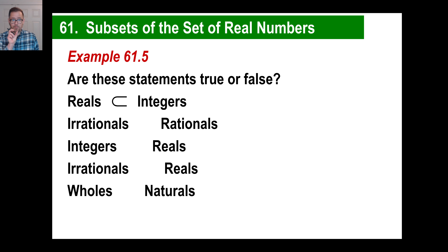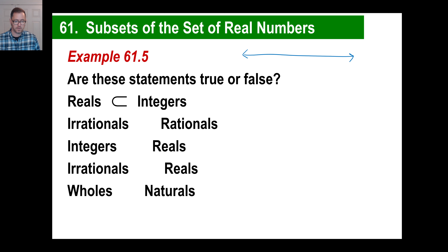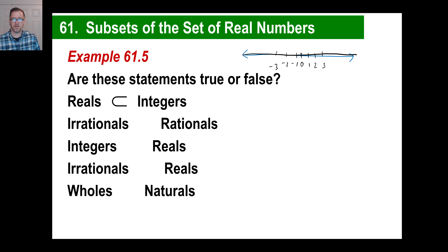True or false: are real numbers a subset of the integers? In other words, are real numbers a small part of the set of integers? The reals are like everything on the number line, while integers are just ..., -3, -2, -1, 0, 1, 2, 3, ... Is everything on the number line a small part of just the integers? No. Are irrationals a small part of the rationals? No — by definition, irrationals are not rationals, so that doesn't make any sense.